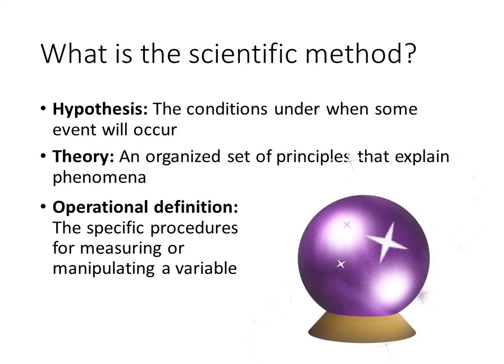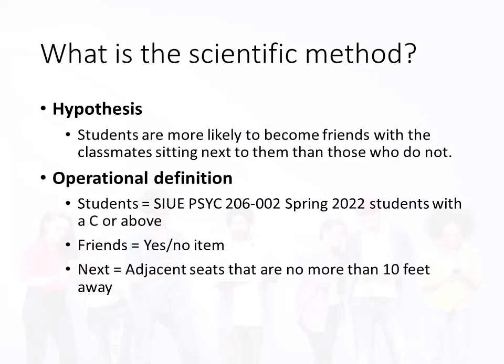In order to test a hypothesis, each conceptual variable must first be transformed from abstract terms into an operational definition, or the specific procedures for measuring a variable. Researchers examine construct validity to assess whether a measure actually measured what it was designed to measure. Here is an example of a hypothesis and a corresponding operationalization of the variables. The hypothesis is: students are more likely to become friends with classmates sitting next to them than those who do not. We might define students as those who attend this class at this university in this semester, friends as spending at least one hour per week together, and next to as sitting in adjacent seats no more than 10 feet apart.